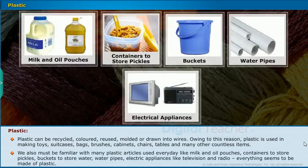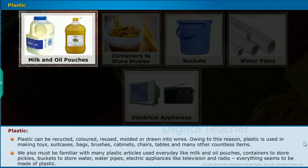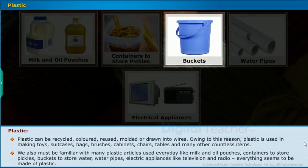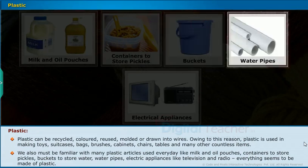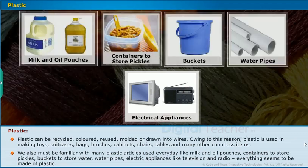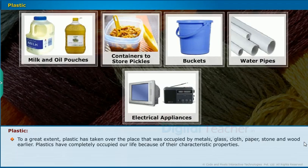We are familiar with many plastic articles used every day — milk and oil pouches, containers to store pickles, buckets to store water, water pipes, and electric appliances like televisions and radios. To a great extent, plastic has taken over the place that was occupied by metals, glass, cloth, paper, stone and wood. Plastics have completely occupied our lives because of their characteristic properties.